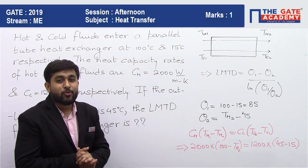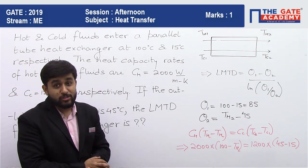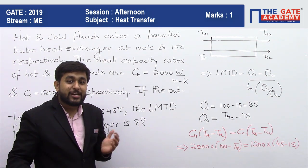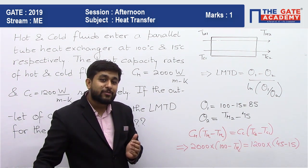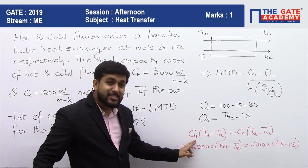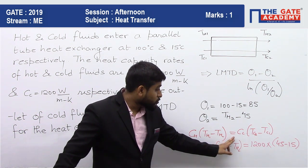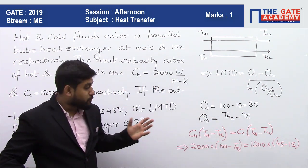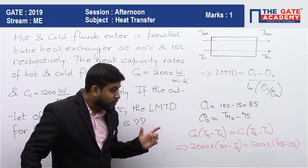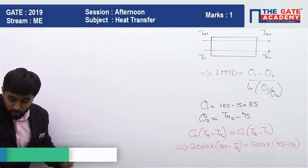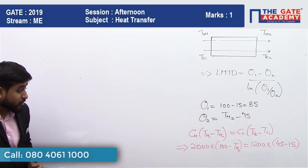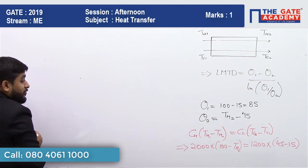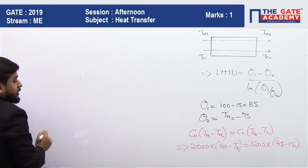Since TH2 is unknown, we need to find it first before we can find LMTD. We can use the steady-state flow energy equation, which tells us: CH × (TH1 − TH2) = CC × (TC2 − TC1). Substituting the values will let us solve for TH2.